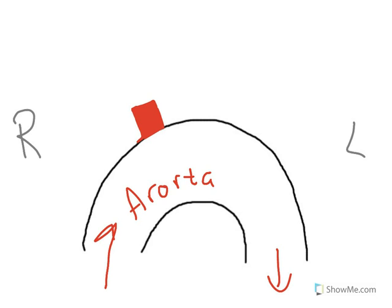Then the next one moving towards the left, in the middle here, we have the left common carotid artery. Now you already know enough about anatomy to know that if I have a left, I have a right — but where in the world is our right common carotid artery? We may be asking ourselves that question right now, and I will not leave you disappointed in answering that.